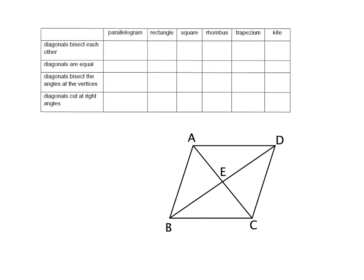Okay, let's go through it quickly. The diagonals bisect each other — that is true for the parallelogram, and so if it's true for that, it's also true for the special parallelograms, and not true for the trapezium. For the kite, it's only one diagonal that gets bisected. The diagonals are equal only when you've got 90 degrees, so that's in your rectangle and your square.